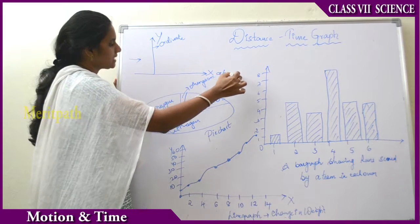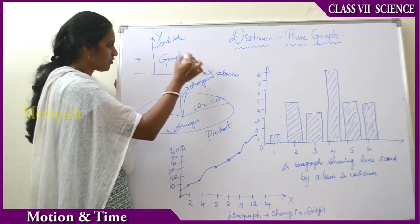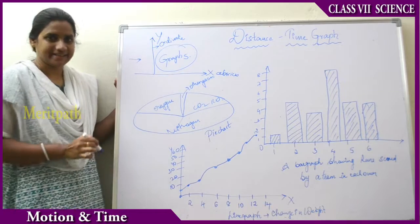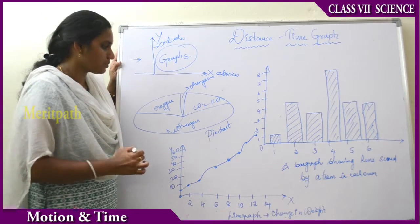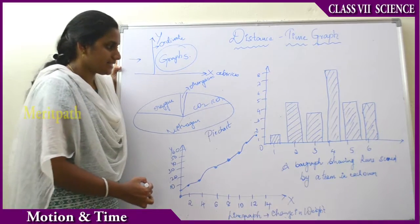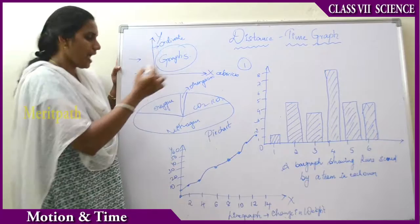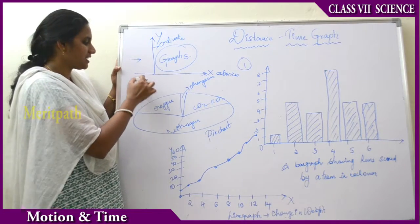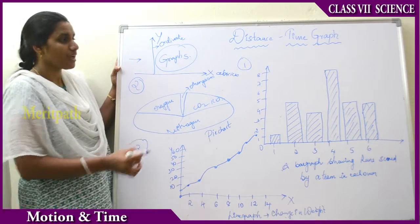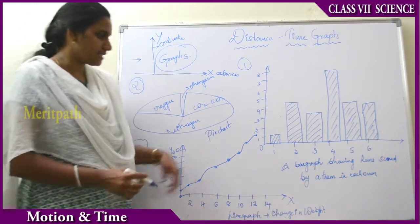On this graph paper we will be plotting different types of graphs based upon our needs. I am showing three types: the first one is a bar graph, the second one is a pie chart, and the third one is a line diagram or line graph. First we will look at the bar graph.